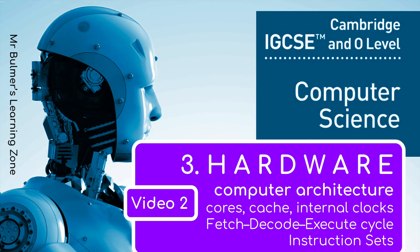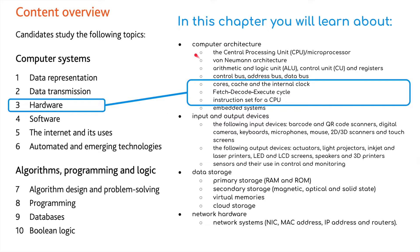Welcome back everybody to the second video to support the third topic, hardware, that supports the computer science IGCSE from Cambridge for the new specification 23 to 25. We're going to be sticking with the first section in hardware — remember it is a massive section — and we're going to be looking at these three elements under computer architecture: the core, the cache, and the internal clock; the fetch, decode, and execute cycle; and instruction sets for a CPU.